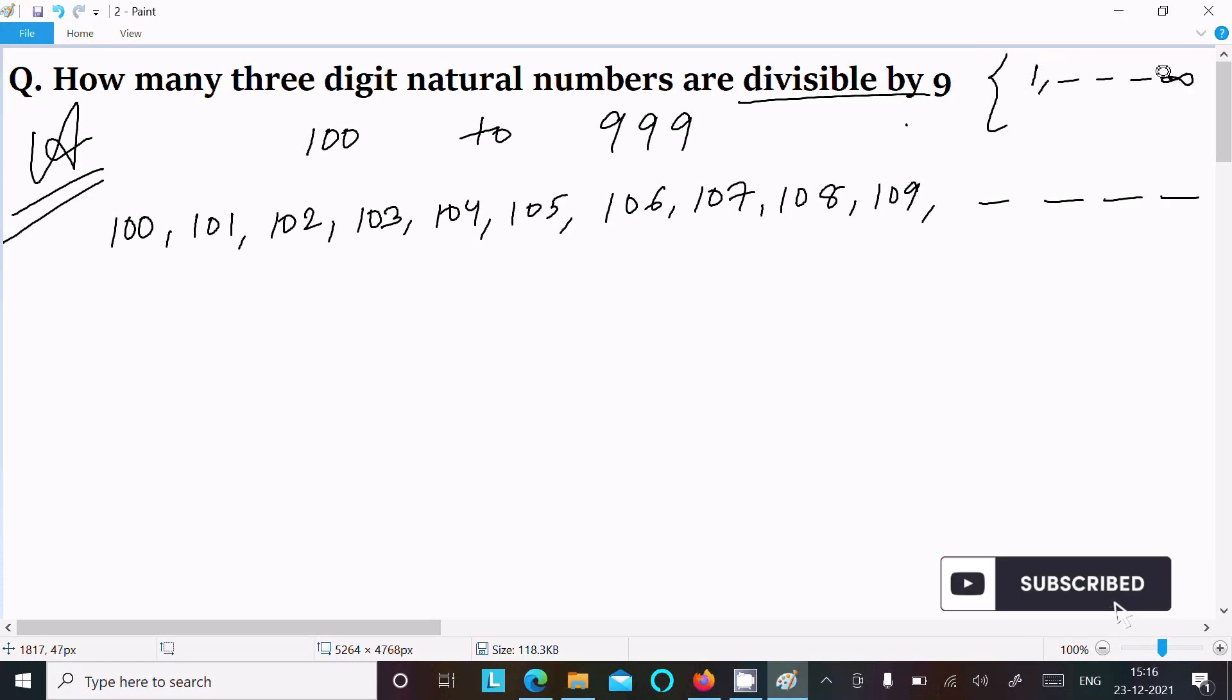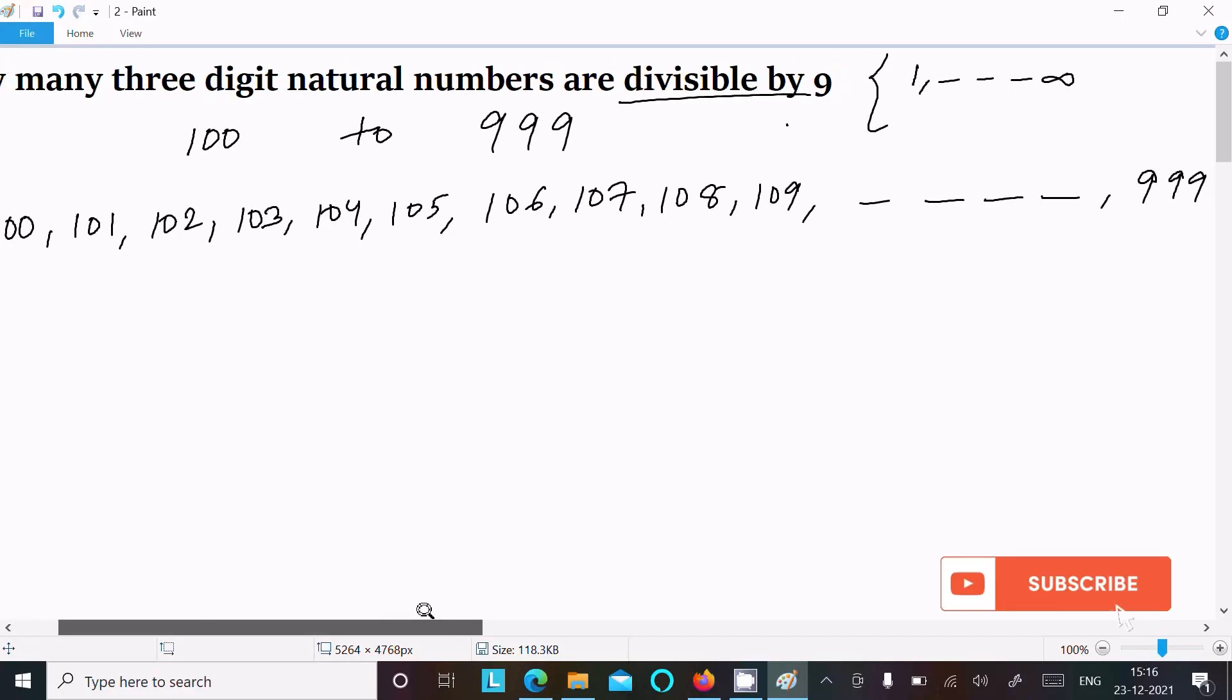3-digit natural numbers start from 100 and go till 999. So all the numbers from 100 to 999 are 3-digit numbers.